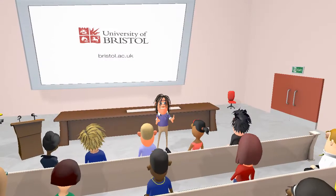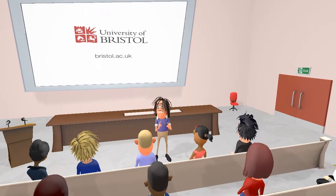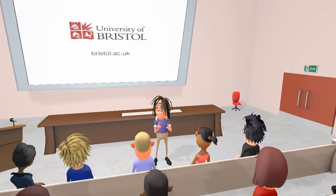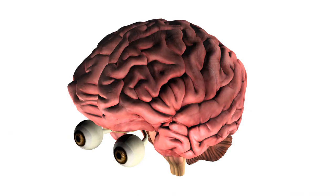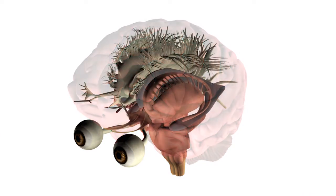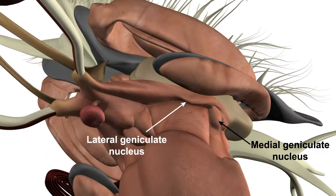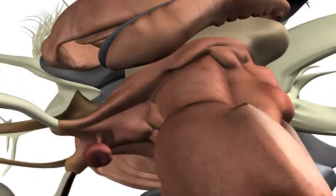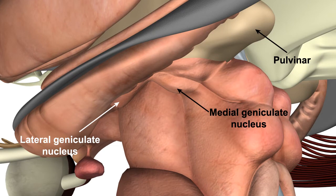So what do we mean by the metathalamus? The metathalamus refers to nuclei that are related to the thalamic nuclei but are not strictly part of the thalamus. These are the medial and lateral geniculate nuclei. They are found beneath the pulvinar of the thalamus and are essentially relay stations in the auditory and visual pathways respectively.